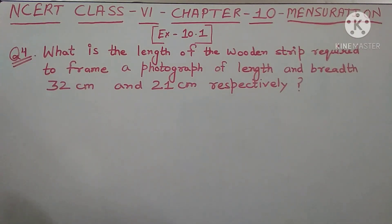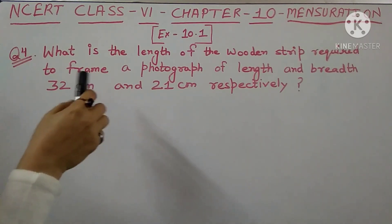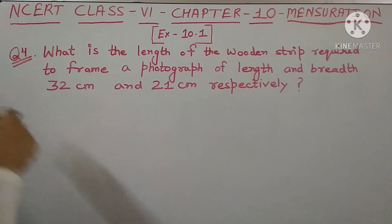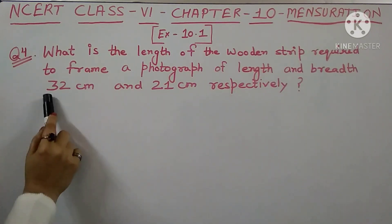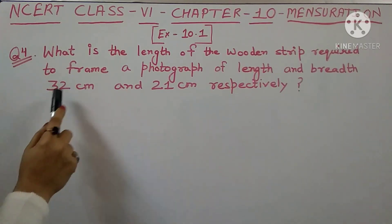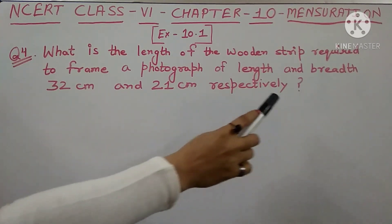So the question asks: how much wooden strip is required to frame a photograph — that is, to make a frame. The photograph's length is 32 cm and breadth is 21 cm.